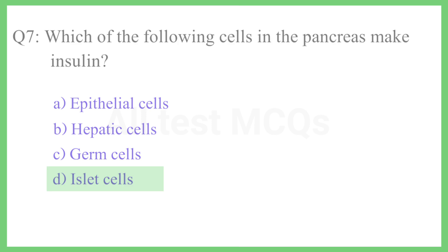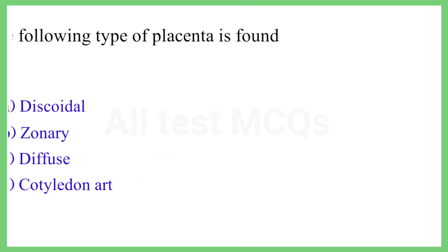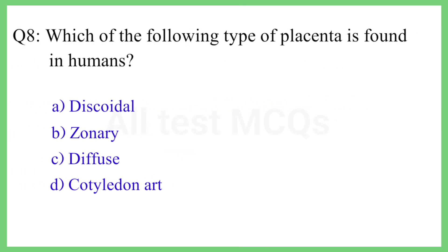Question No. 8. Which of the following types of placenta is found in humans? The correct answer is Option A: Discoidal.